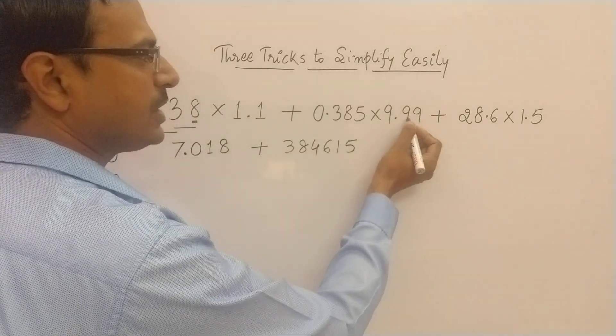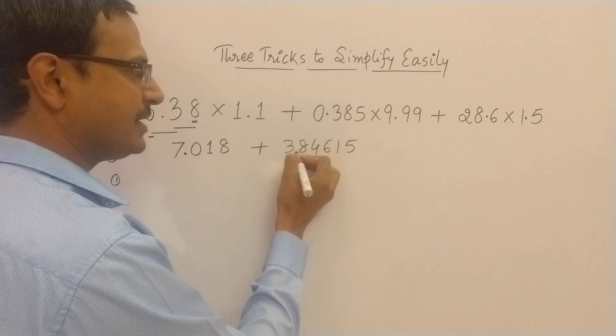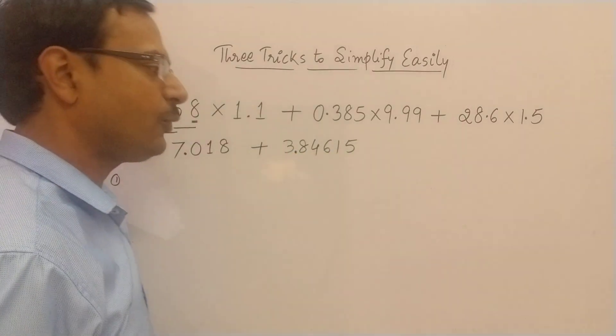How many decimal places? 1, 2, 3, 4, 5. So 1, 2, 3, 4, 5, this gives us 3.84615.